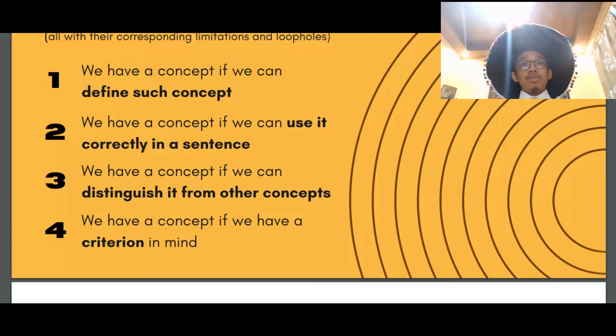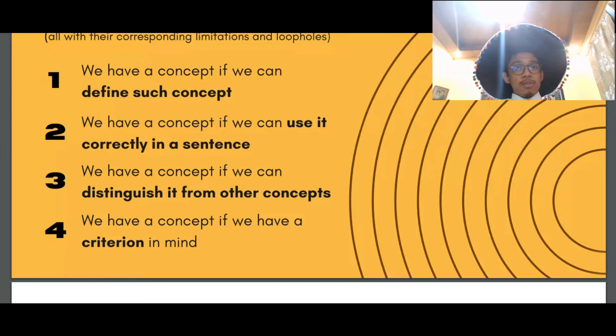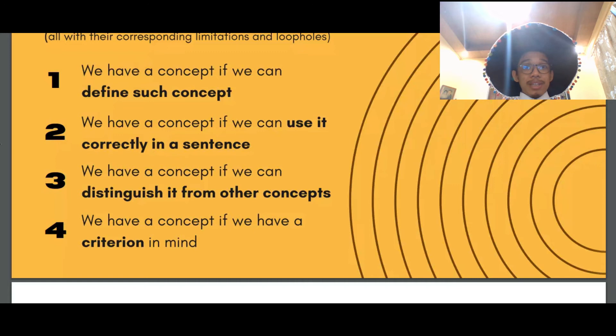Second is that we have a concept if we can use it correctly in a sentence. Although it does not require us to give a definition in uniform correctness according to the excerpt, there may be some confusion with regards to how the word is perceived. For example, again, with the most common example in the excerpt is the color red.